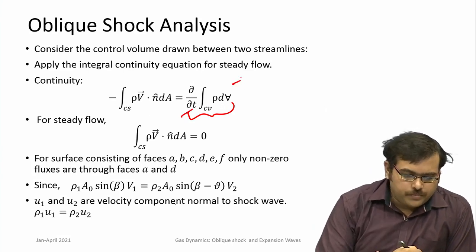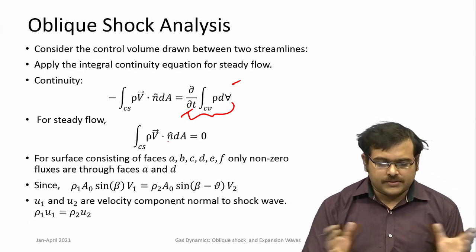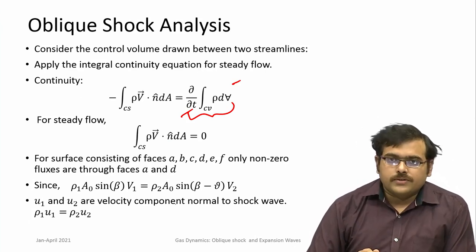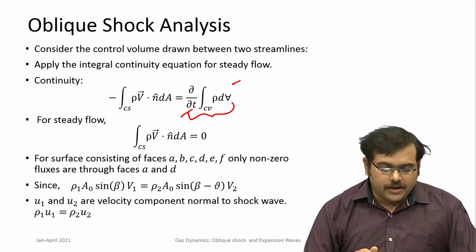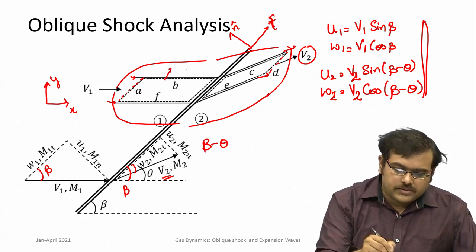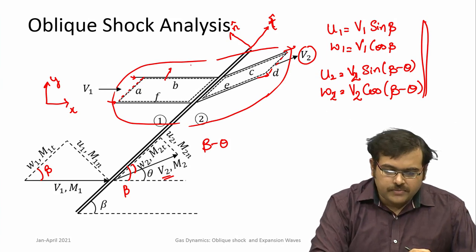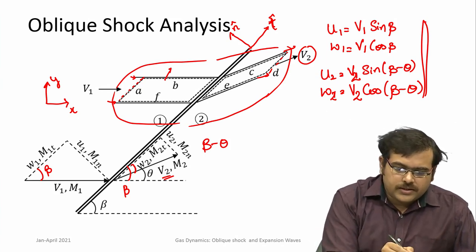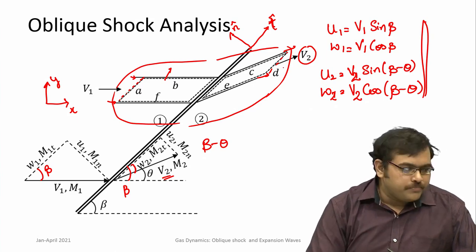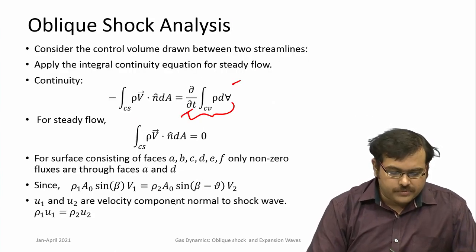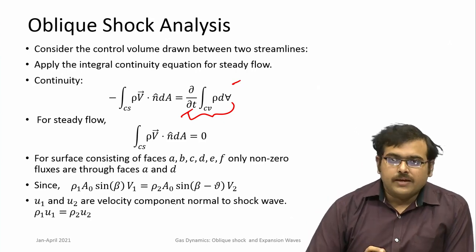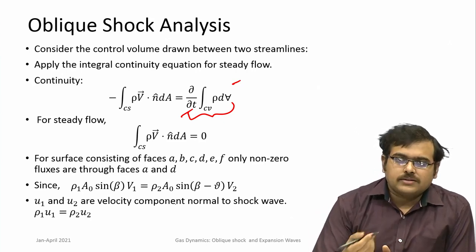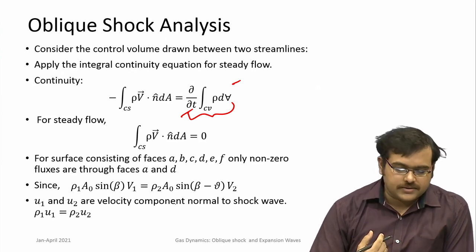In steady flow there is no change in mass of the control volume, so the result is zero and we only look at fluxes across the control volume. It is bounded between two streamlines, so there is no mass flux across those directions — only flux entering through face A and leaving through face D.